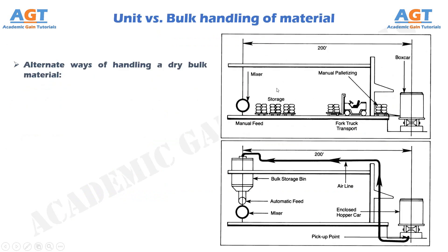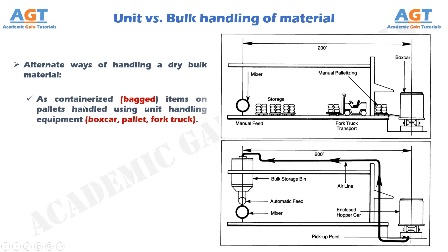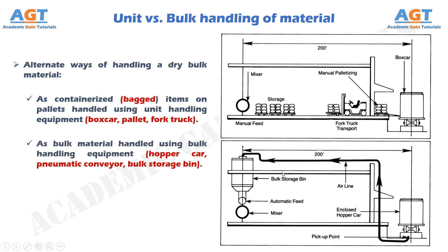This figure shows an example of alternate ways of handling a dry bulk material. Dry bulk materials can be handled as containerized, bagged items on pallets using unit handling equipment like box car, pallet, and fork truck. Alternatively, dry bulk materials can be handled using bulk handling equipment like hopper car, pneumatic conveyor, and bulk storage bin. The handling of dry bulk materials as unit loads versus bulk loads is demonstrated in this figure.